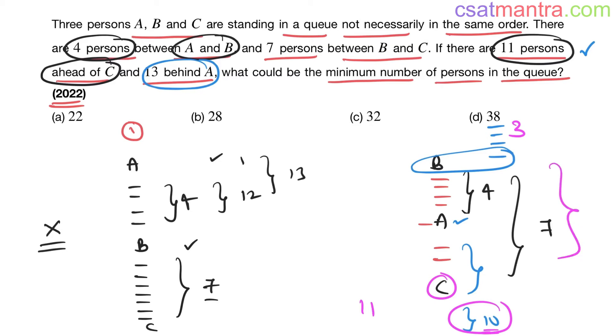Now let's count: 10, 10 plus 1, 11, 11 in between 7, and B is one. After B there are three, so 3 plus 7, 10, 10 plus 12, 22. Yes, we have 22 as the option. Every other option is greater than 22, so minimum number of persons in the queue could be 22.